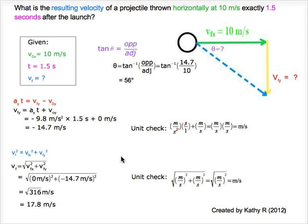After this, we need to find out the direction. We use the trigonometry equation shown in purple. We substitute the values and get 56 degrees.